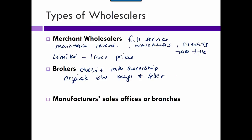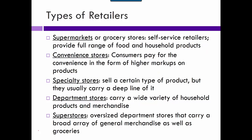A manufacturer's sales office performs warehousing or wholesaling services, but just for one firm. This is a business-to-business kind of thing, and they just work for one manufacturer. Types of retailers you're probably familiar with: supermarkets are like grocery stores — self-service ones with a range of products. Convenience stores are generally a little bit higher price, and it's all about location.